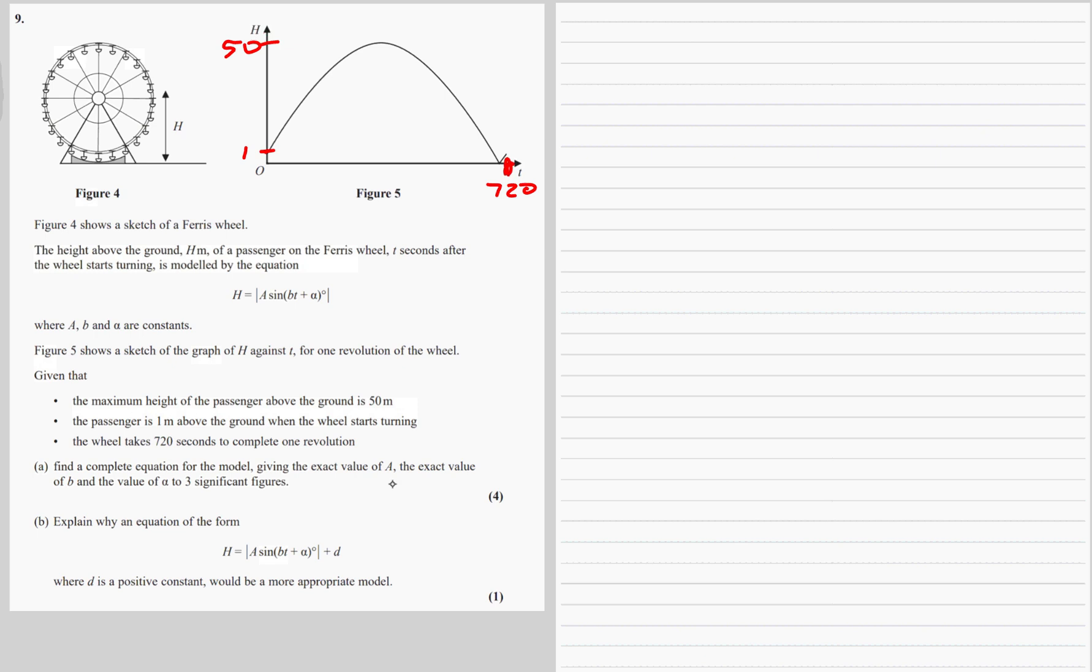Find the complete equation for the model, so the exact value of A, the exact value of B, and alpha to three significant figures. We've been given the form of the model, so h is the mod of A sine Bt plus alpha degrees. That's our model. Using this information, the maximum height is 50.